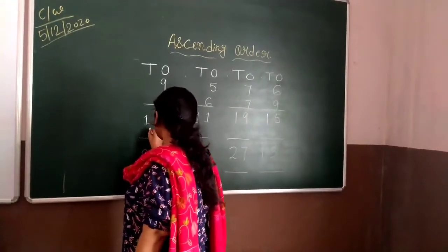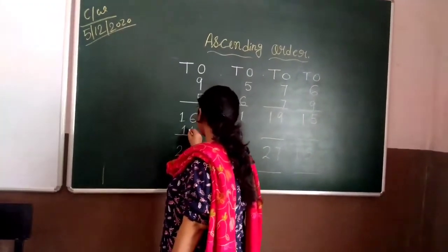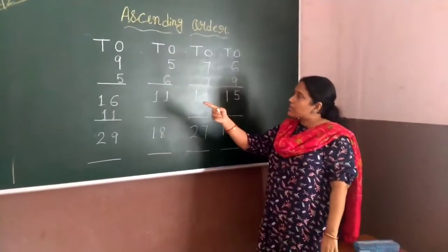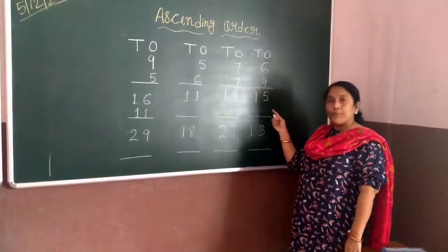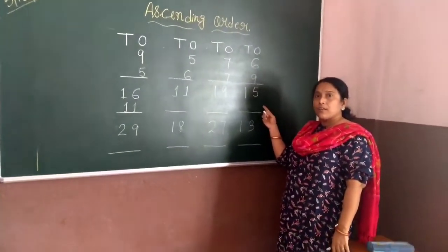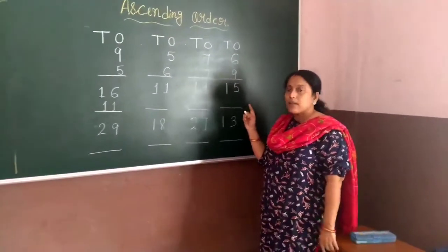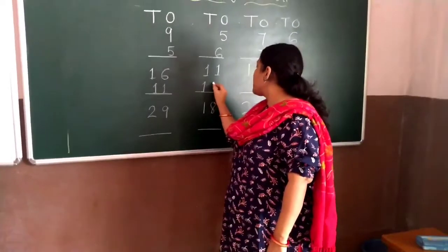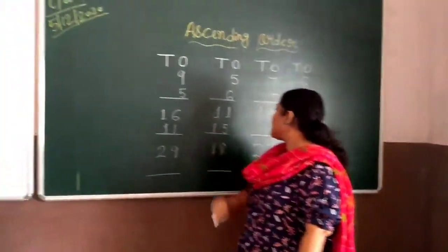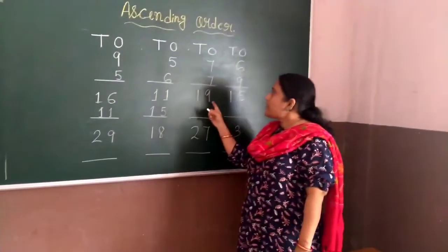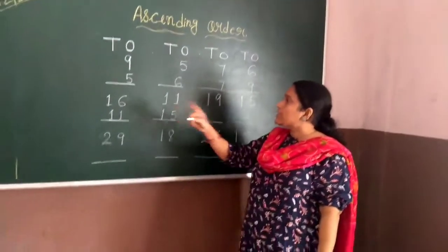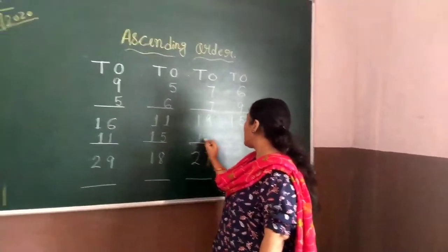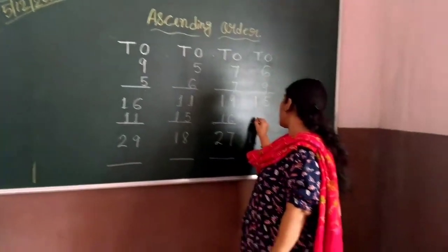So I am writing 11 first. Then which number is the smaller number — 16, 19, or 15? Yes — 15. So I am writing 15. Then which number is smaller — 19 or 16? 16. Then 19.